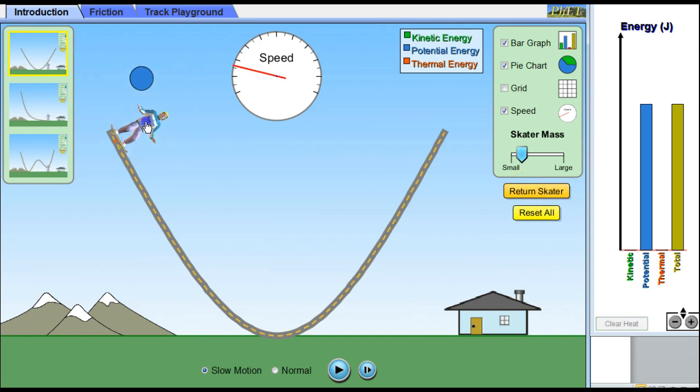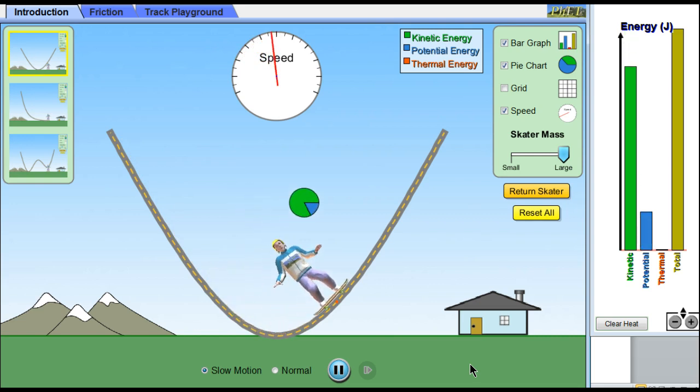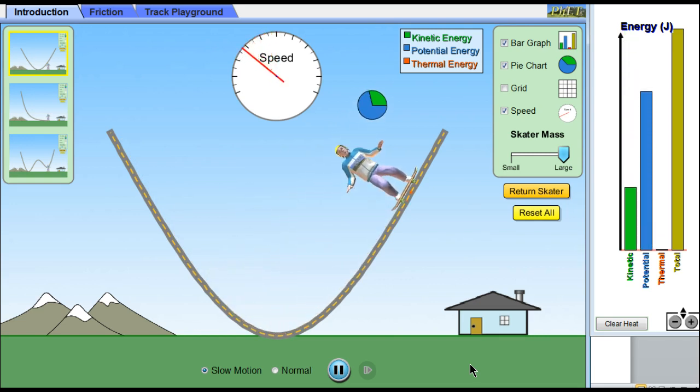Now we're going to return the skater to the top. I'm going to make the skater large. Now, still slow motion, something you should notice. I've increased the mass a lot, but I have not changed the speeds that are showing up as they move.